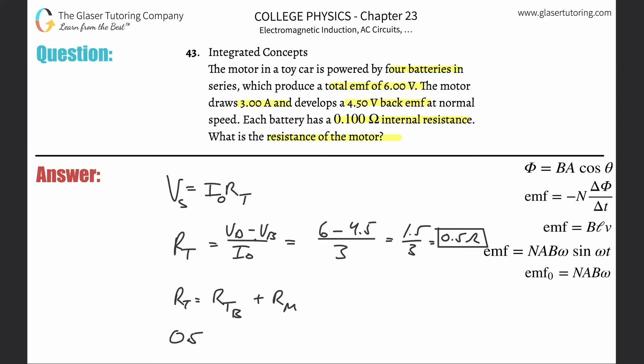So now basically what we realize is that we can take the total resistance that we found over here, 0.5 ohms, and now we're going to use the total resistance for the batteries. So each battery has 0.1 ohm, but you got four of them, so you're going to multiply that by four, add to that the resistance of the motor. And when we solve this now, we get the resistance of the motor is equal to 0.1 ohm. So it just so happened to turn out to be the same as the battery, but that's just coincidental.